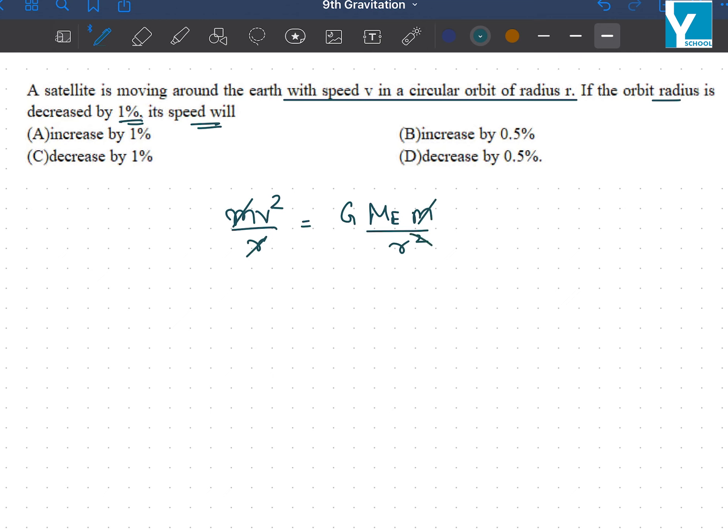Now, as you can see, v² is equal to GMₑ upon r. Or we can write it as v is proportional to 1 by root r, or v is proportional to r to the power minus 1 by 2.